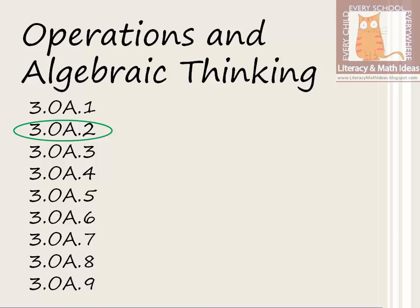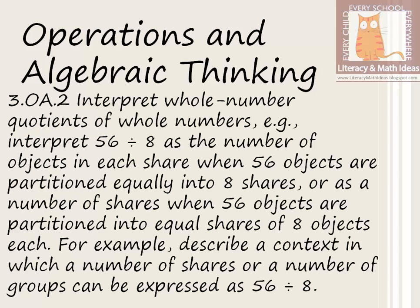Let's take a look at the standard. It says: interpret whole number quotients of whole numbers. For example, interpret 56 divided by 8 as the number of objects in each share when 56 objects are partitioned equally into eight shares, or as a number of shares when 56 objects are partitioned into equal shares of eight objects each.